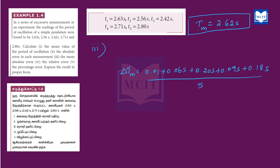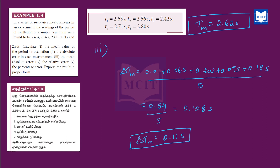If we add all the absolute errors and divide by 5, we get 0.108 seconds. Rounding up — since 8 is above 5 — we add 1, giving delta tm equal to 0.11 seconds.